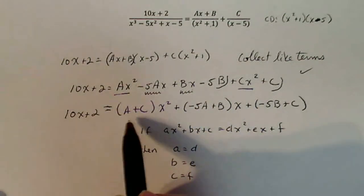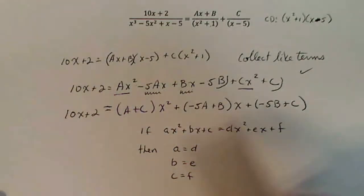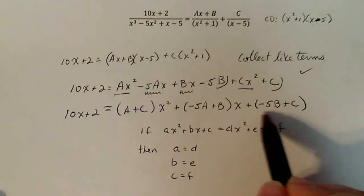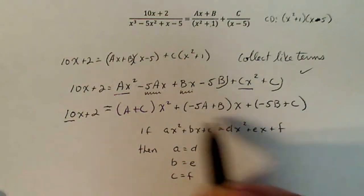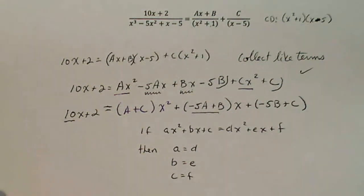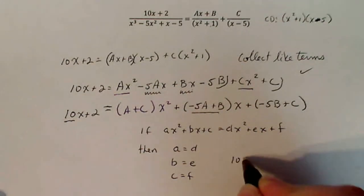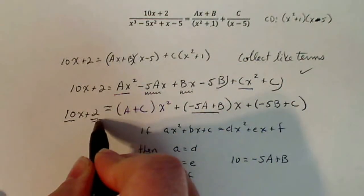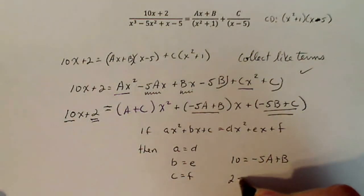So what I'm going to do up here, I'm going to say, okay, whatever the coefficient on the left and the right of the x squared term, they have to be equal. The coefficient for all the x terms on the left and the right, they have to be equal. Same thing with the constants. So I know I see 10x here. So that means 10 has to equal minus five a plus b. Then I have a constant term two that has to equal my constant term over here. So that's two equals minus five b plus c.